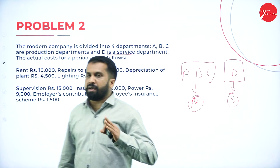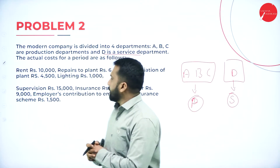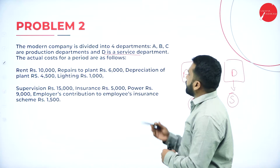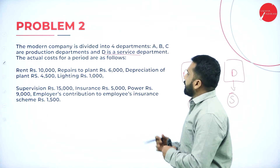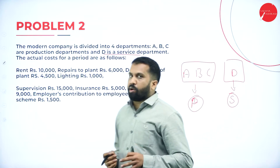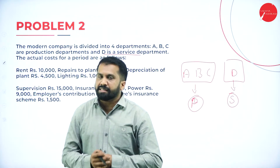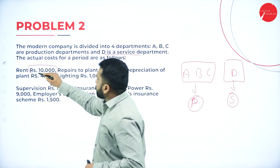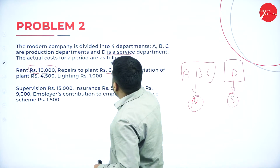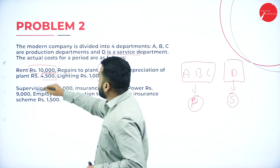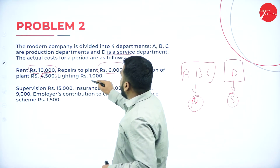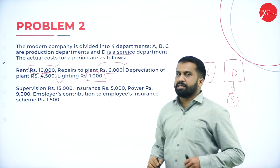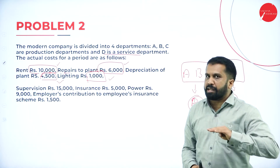Now, the given expenses are: rent of rupees 10,000; repairs to plant 6,000; depreciation to plant 4,500; and lighting is 1,000. These are the 4 expenditures.